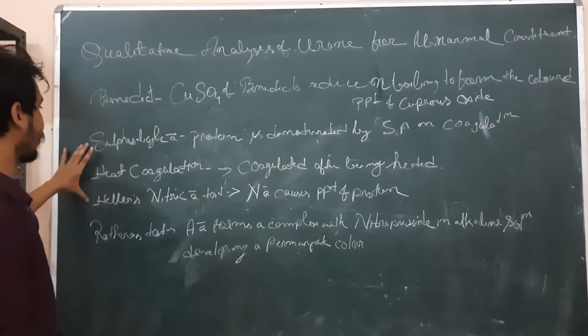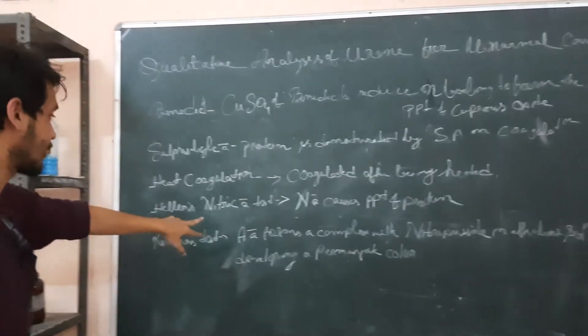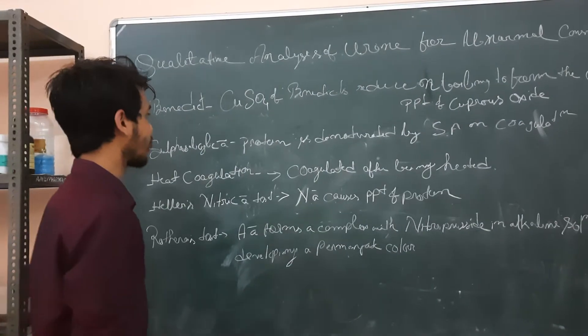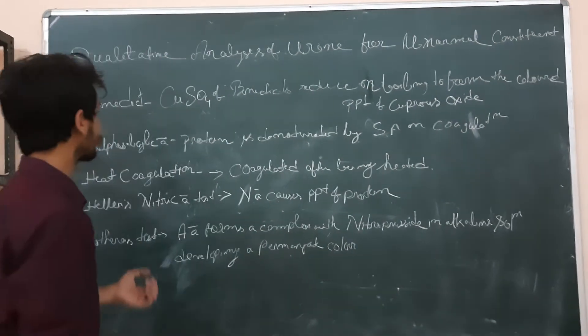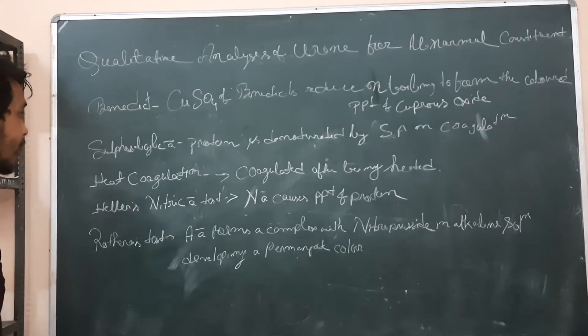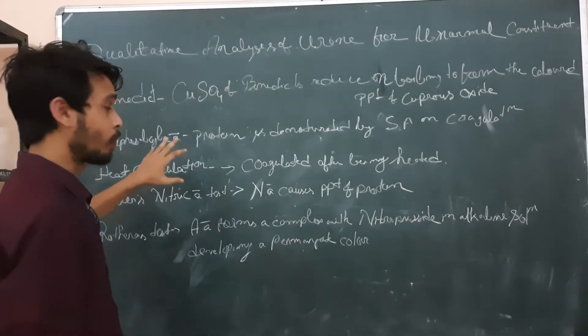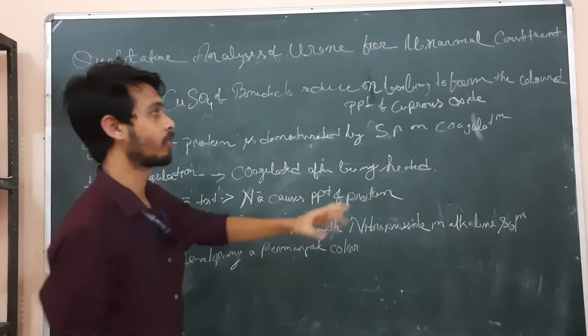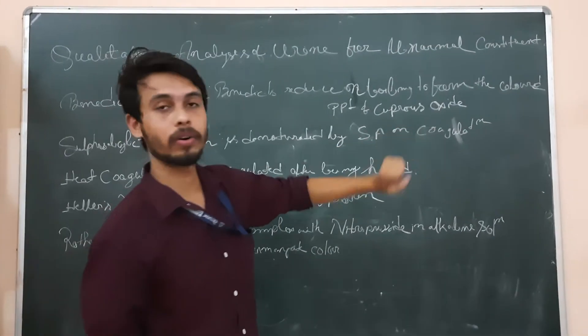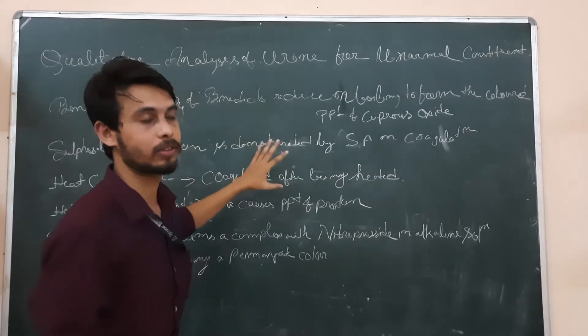Next three tests, that is, sulfosalicylic acid test, heat coagulation test, and Harris nitric acid test. These three tests we are performing for the determination of protein. So first we will see the sulfosalicylic acid test. For this, albumin is a protein. So albumin is denatured by the sulfosalicylic acid on coagulation. So on the coagulation of this albumin, it will be denatured.